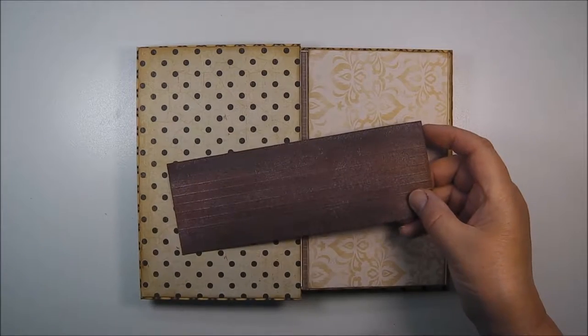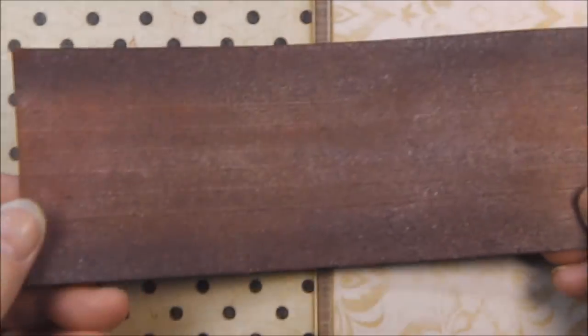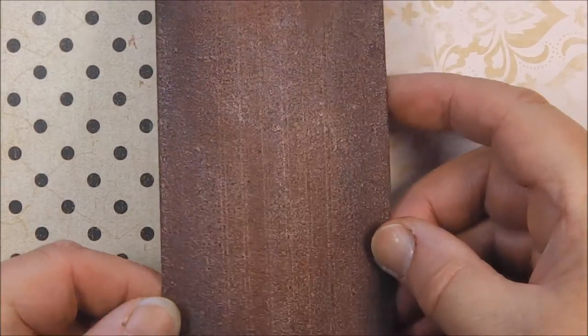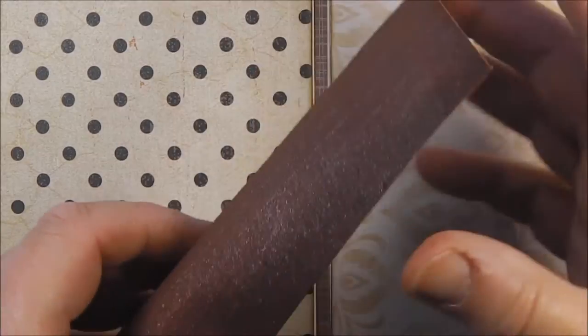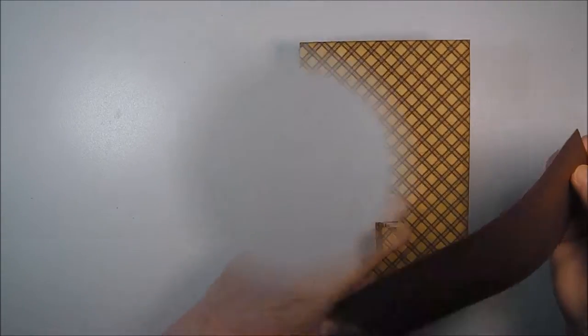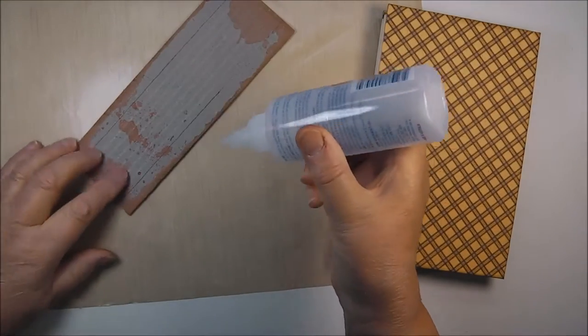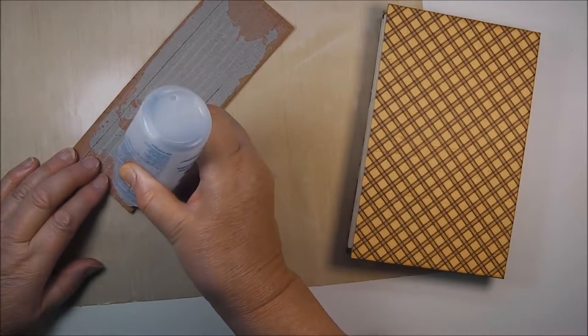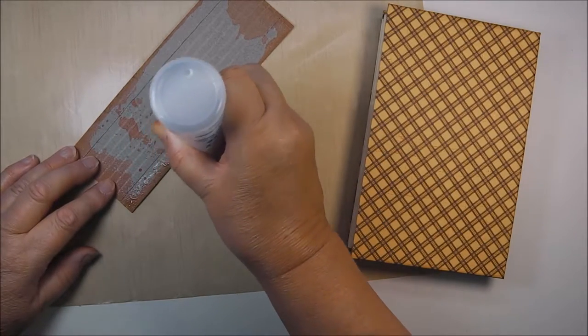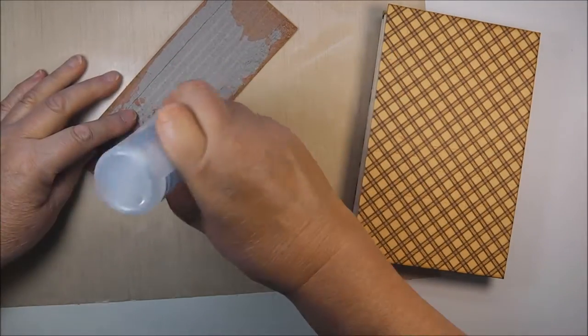Here's a piece of grunge paper that I've colored up with distress inks and dyes and sprays and grunged it up a fair bit to make the spine. I like the weight of the grunge paper, it's very robust and flexible. I've run that through my scoreboard at every quarter of an inch to give some additional flexibility and it helps to sort of round the spine.